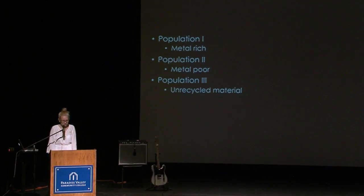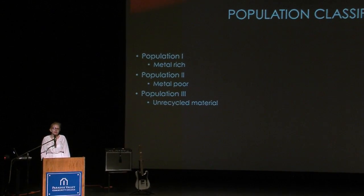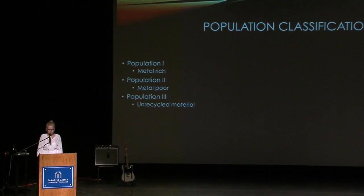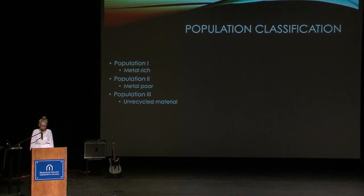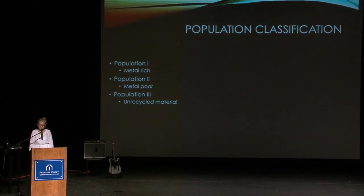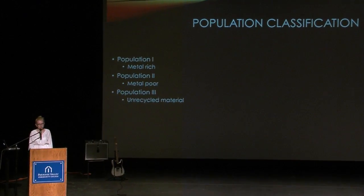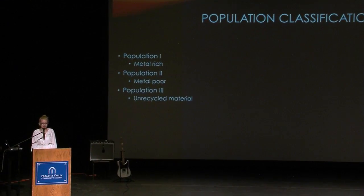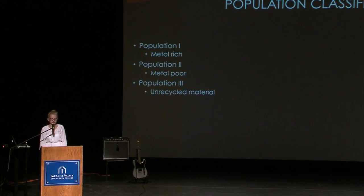Next is population classification of stars — a way to classify stars depending on what they're made of. Population 1 stars are very metal-rich, which means the materials used to make them have been recycled many times: a star was made, exploded, and then the materials from that exploded star were turned into a new star.